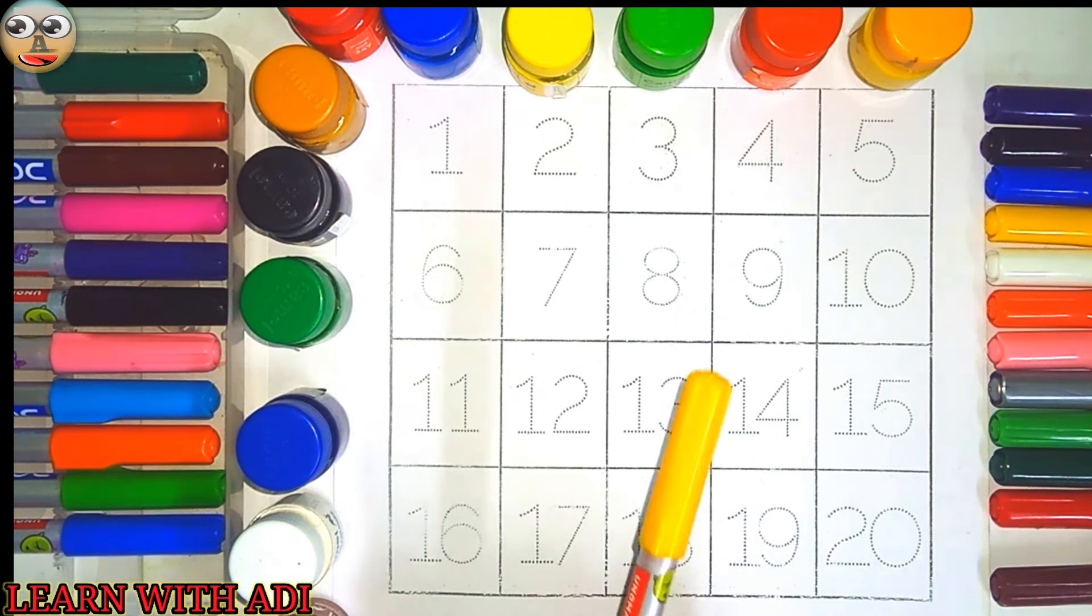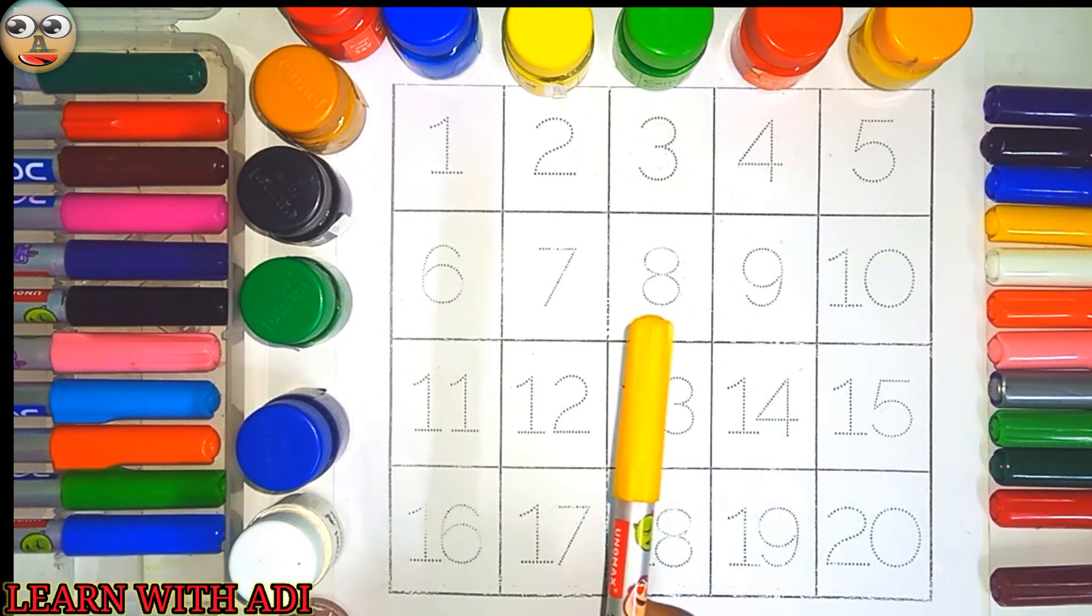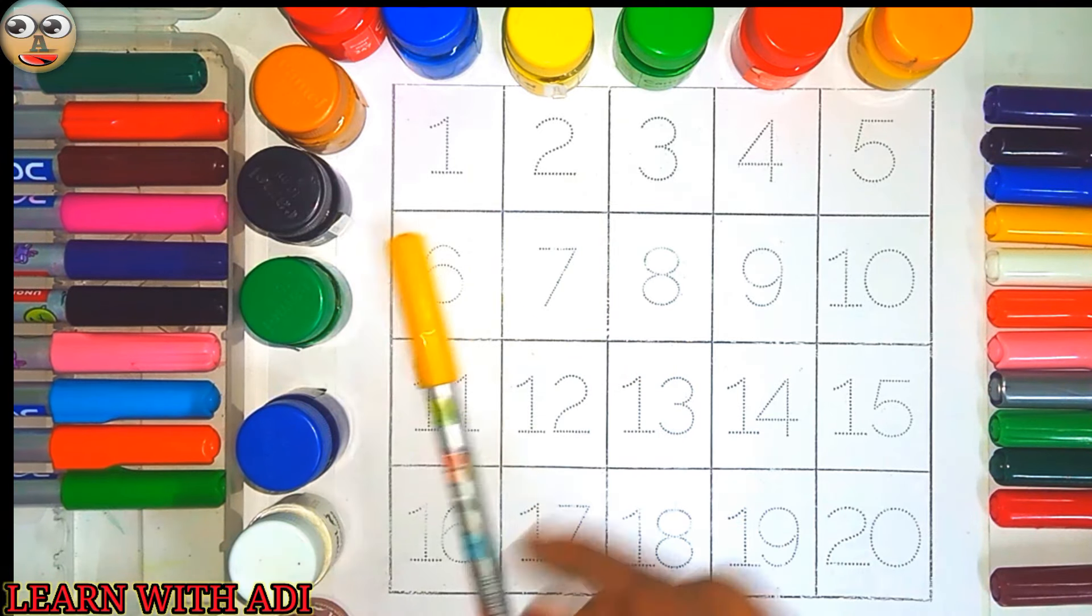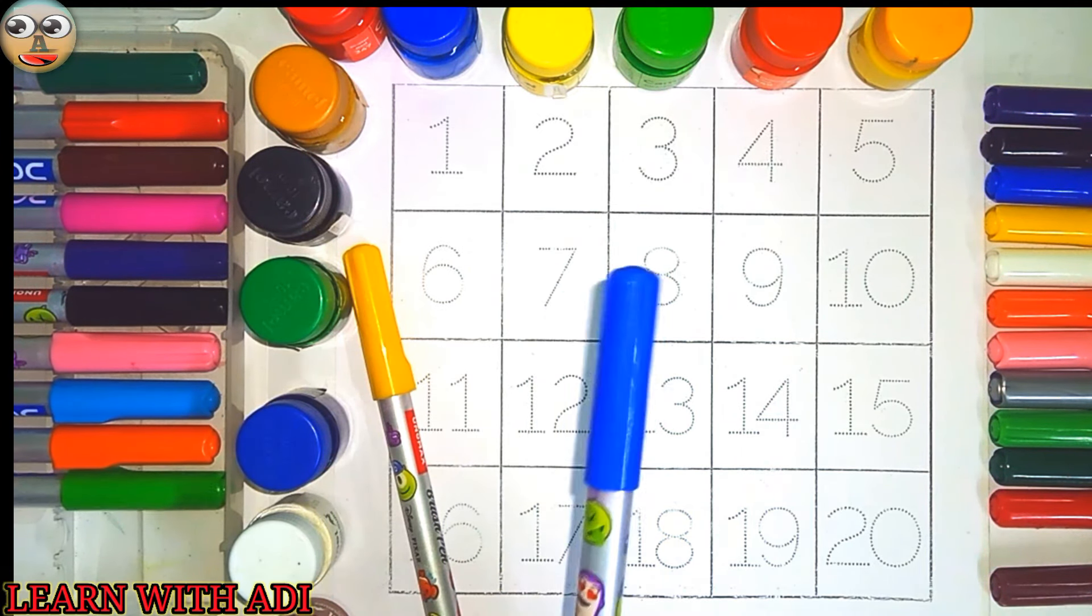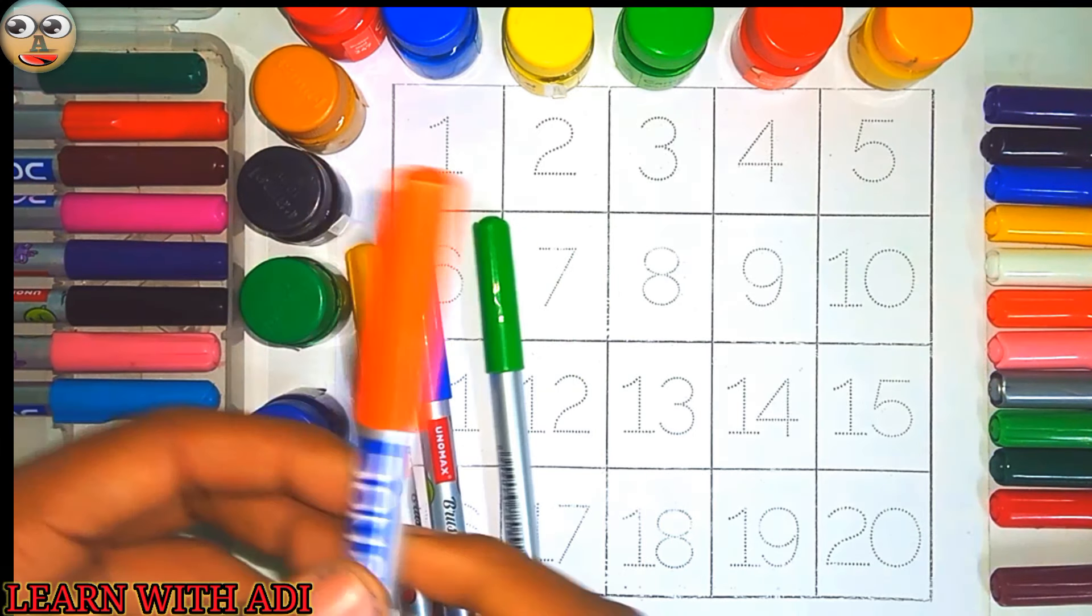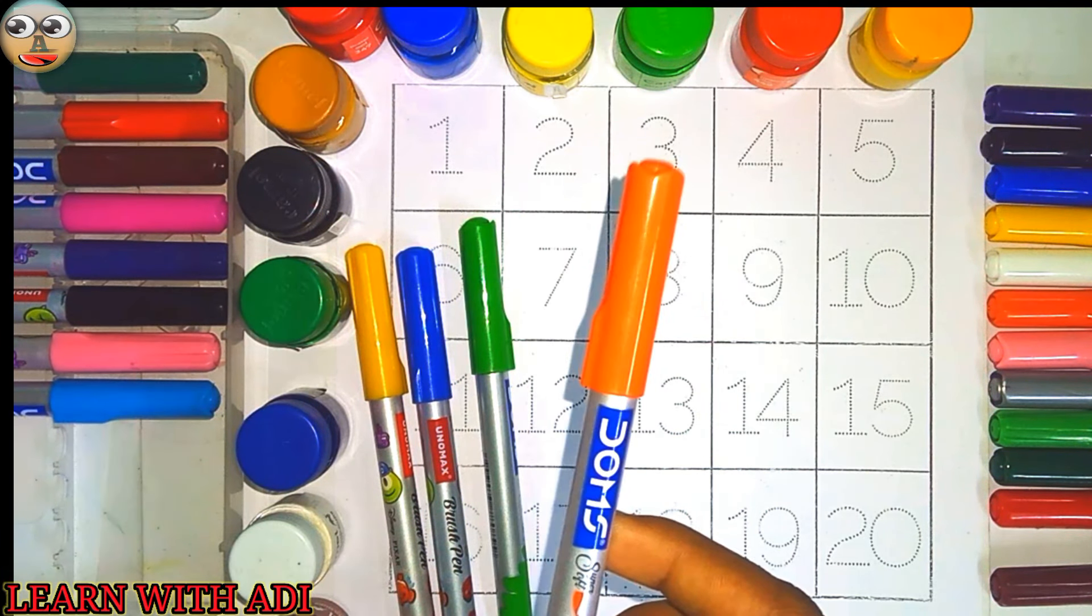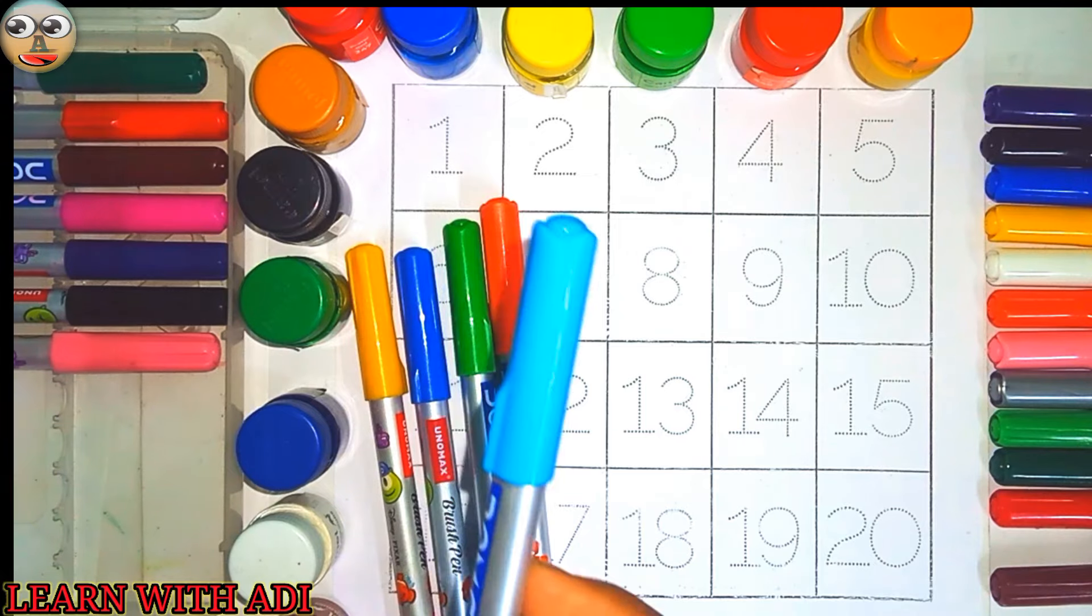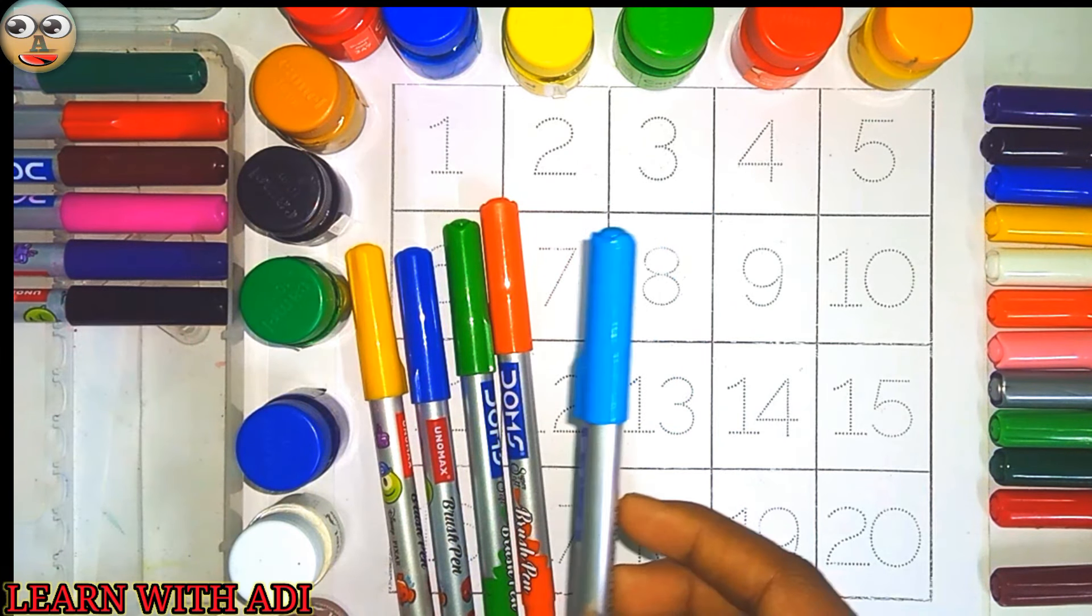Let's learn the color names. This is yellow color. This is blue color. This is green color. This is orange color.